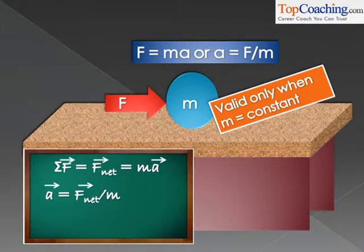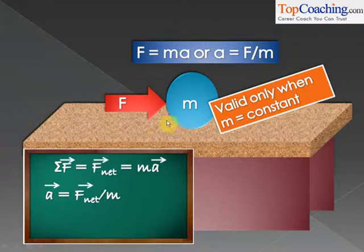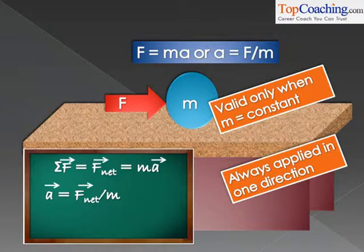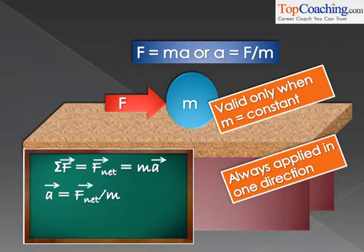Why is f equal to ma only applicable when mass is constant? We learn about all these details in future chapters. But for now, only remember that the mass of the body on which you are applying f equal to ma must be constant. Another important thing is that f equal to ma is generally applied in one single direction. For example, if I am applying a force on this ball towards the right, my acceleration will be in the same direction as the direction in which the force is applied. F towards the right is mass into acceleration towards the right. I cannot say force towards the right equals mass into acceleration upwards — that is not possible. So you always choose a direction and then apply f equal to ma.